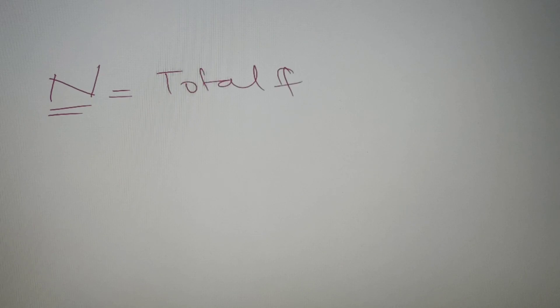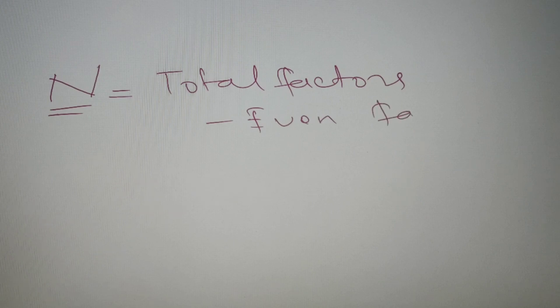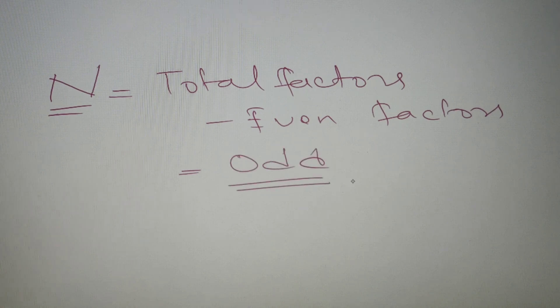There is also a different method we can apply. To find the number of odd factors for n, we can first find the total number of factors, then subtract all the even factors. That is: odd factors = total factors − even factors.